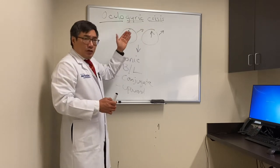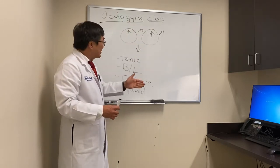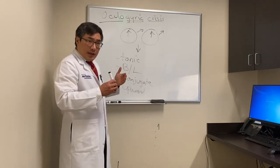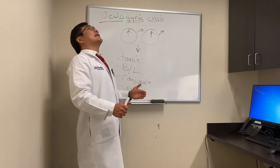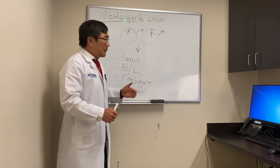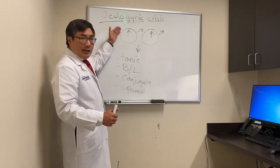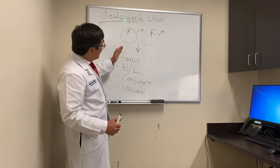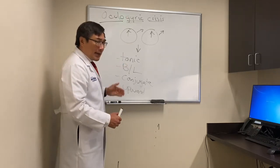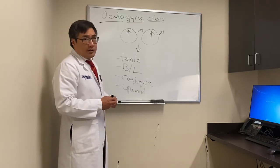Patients who are in oculogyric crisis might have disordered thinking, agitation, restlessness; they might have other automatisms. They might stiffen up and roll backwards — we call that opisthotonus. So it's a dystonic reaction that causes the eyes to gyrate upward tonically.